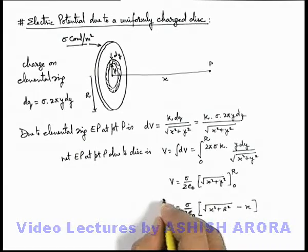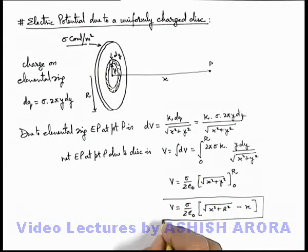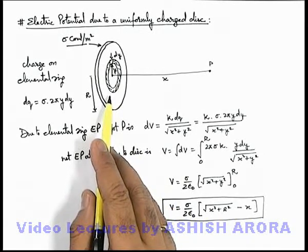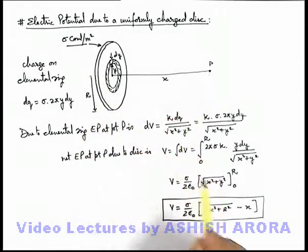This is the result for electric potential due to uniformly charged disc at a distance x on its axis from its center at a point on its axis.